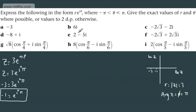Let's now look at the next one. We've got 6i, and that's going to be just here. This is on the imaginary axis. So we can see quite clearly we have a value of r of 6.